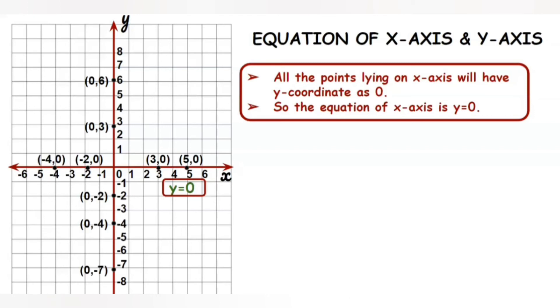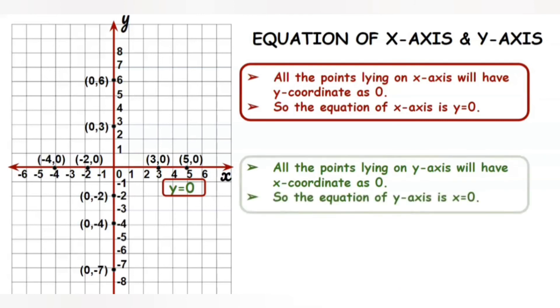So, like this we can take any number of points on the y-axis and we observe that all these points lying on the y-axis will have their x-coordinate as 0. So, the equation of this y-axis is x=0.